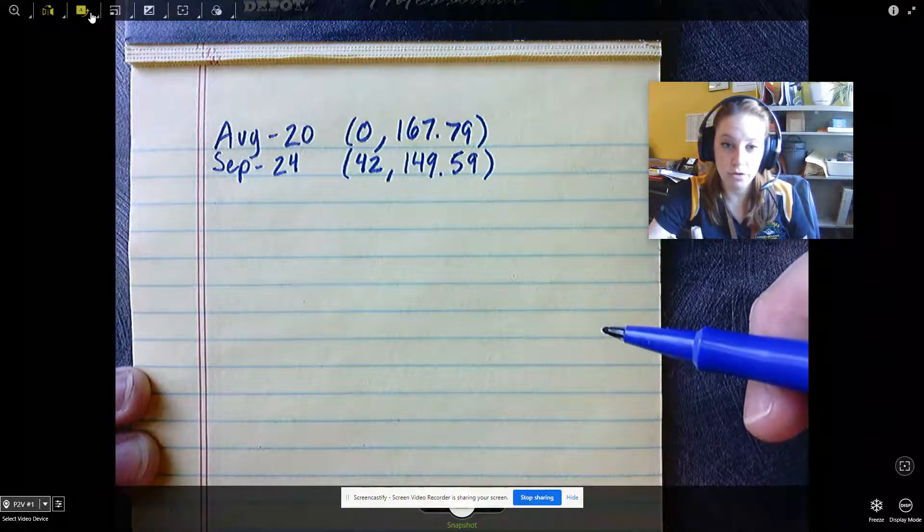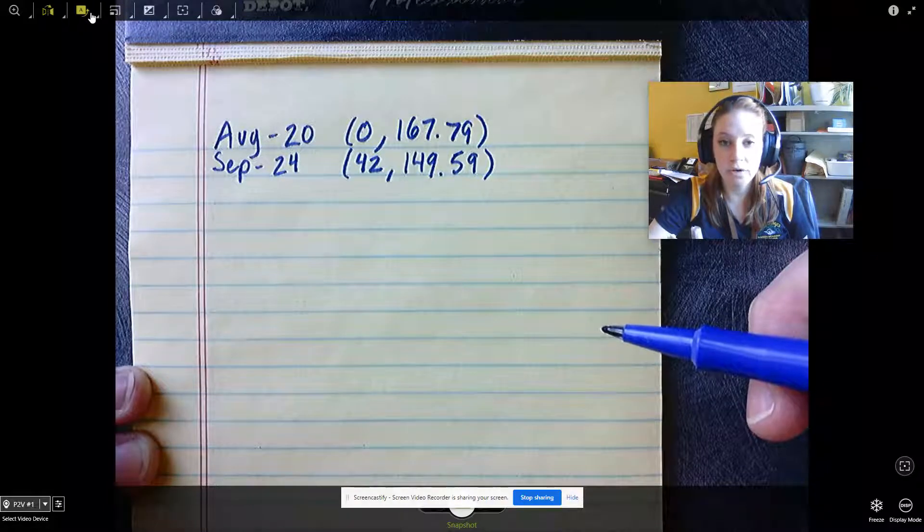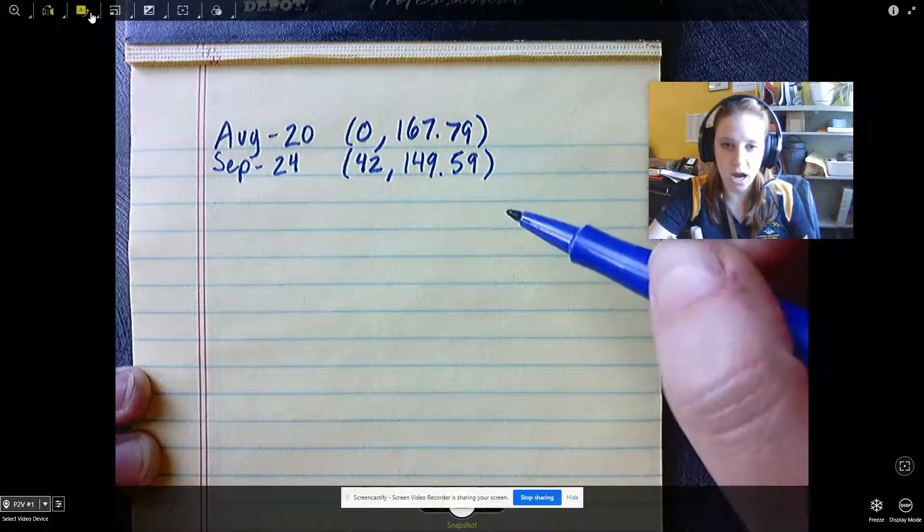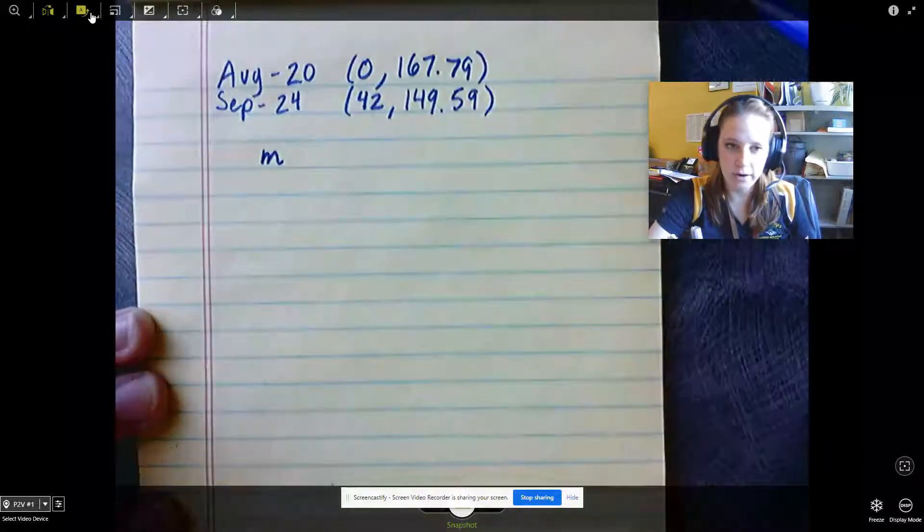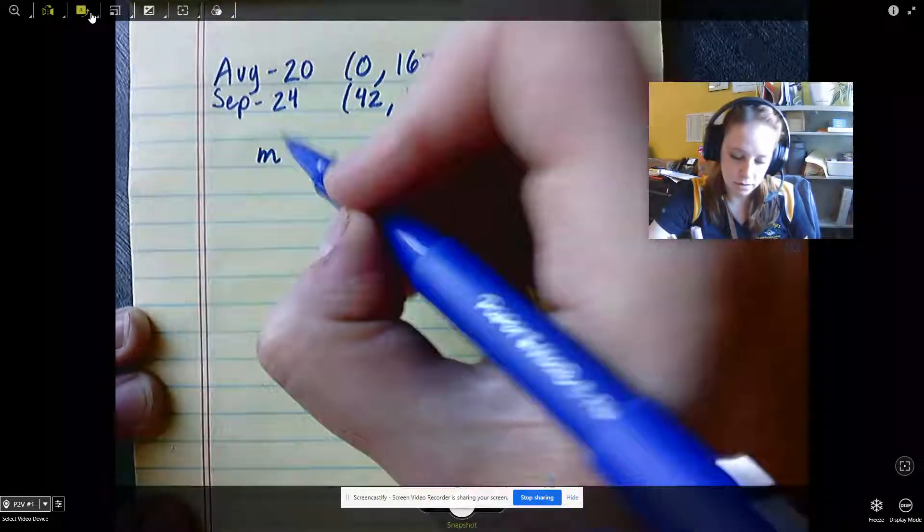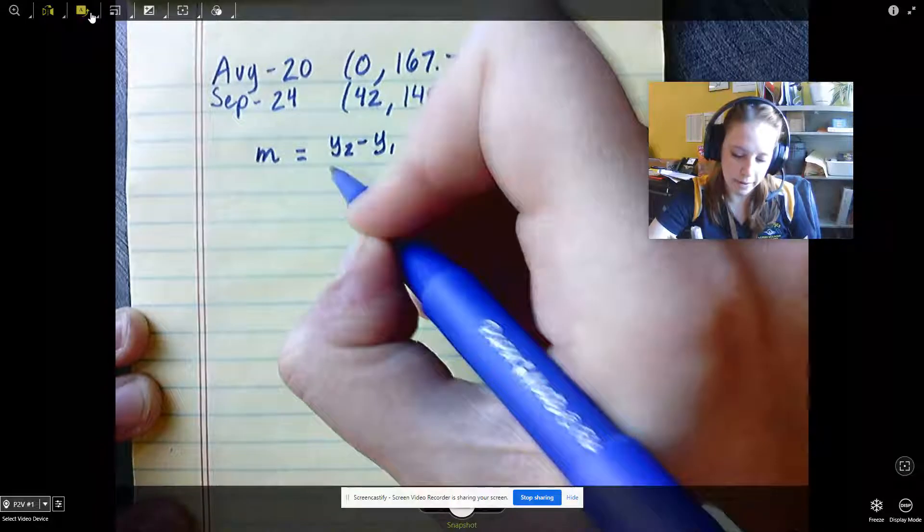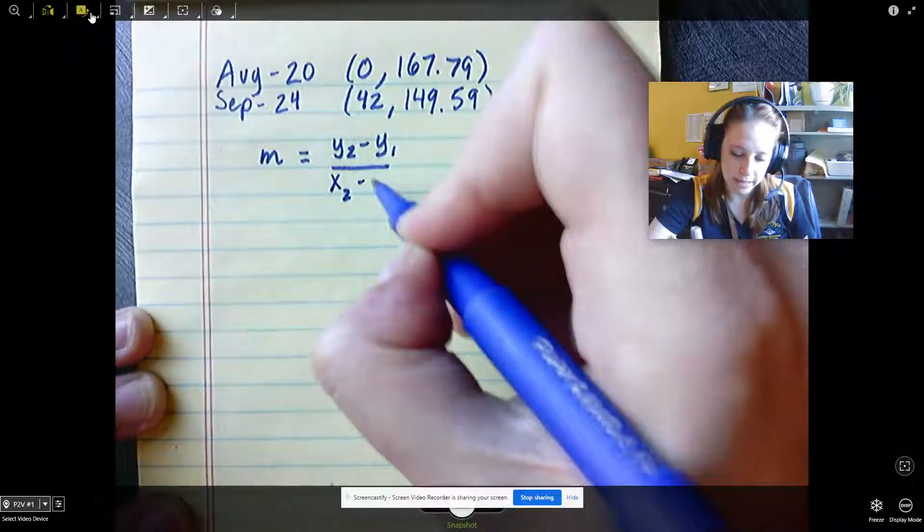Now we're going to use those coordinate points to calculate the slope. I know that the slope is going to be a negative value because the price of the stock is declining. The slope formula, we use a little letter m to stand for slope, and then it's y2 minus y1 divided by x2 minus x1, meaning the subscripts are just the two different y values and two different x values.